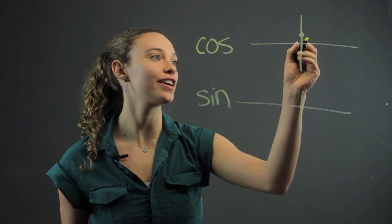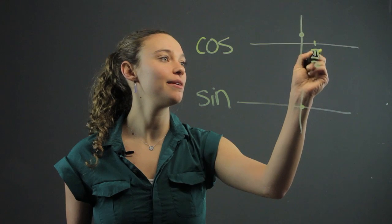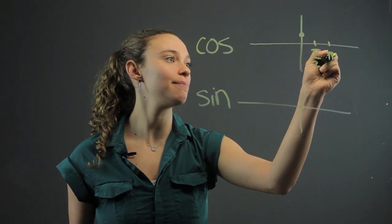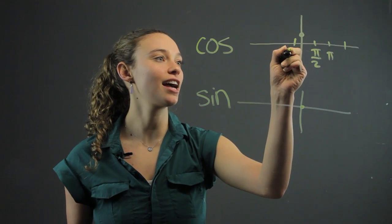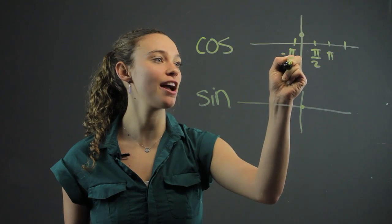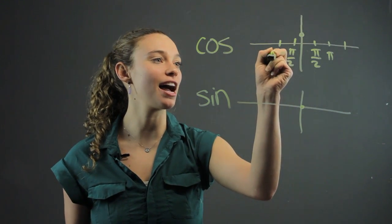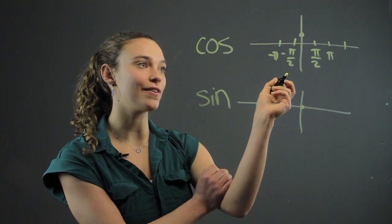Let's look at cosine first. On the graph, we want to label it with pi over 2 and pi, and this is negative pi over 2, and this is negative pi. Those are the increments that we want to set up the graph with.